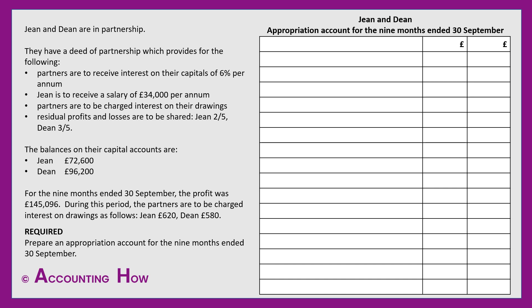Here we have another question. This question is slightly different in that if you look at the information at the top, in their deed of partnership we can see references to per annum — per year. For example, Jean is to receive a salary of £34,000 per annum, meaning any yearly figure will need to be adjusted so that it covers just the nine months we're being asked to prepare the account for. You may wish to pause and have a go yourself, then check your workings when you're ready.